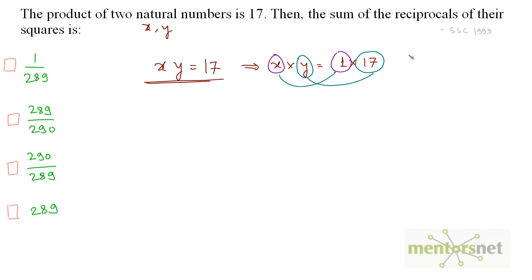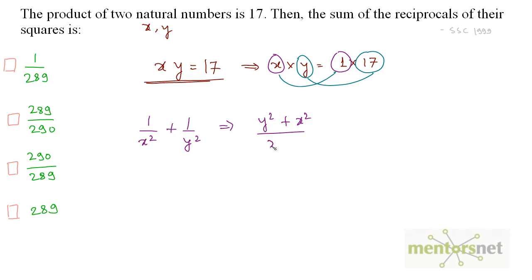What has been asked is the sum of the reciprocals of their squares: 1 by x squared plus 1 by y squared. This can be written as y squared plus x squared divided by x squared y squared, which equals y squared plus x squared divided by (xy) squared.